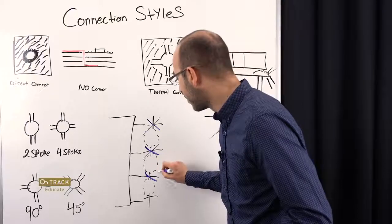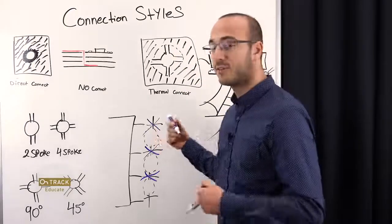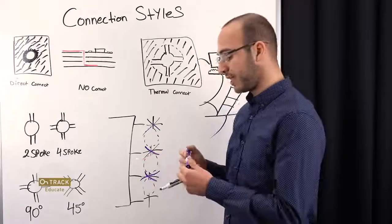And you can see at 45, we're avoiding these clearance rules. And we'll keep our four spokes, and we'll keep a good connection.